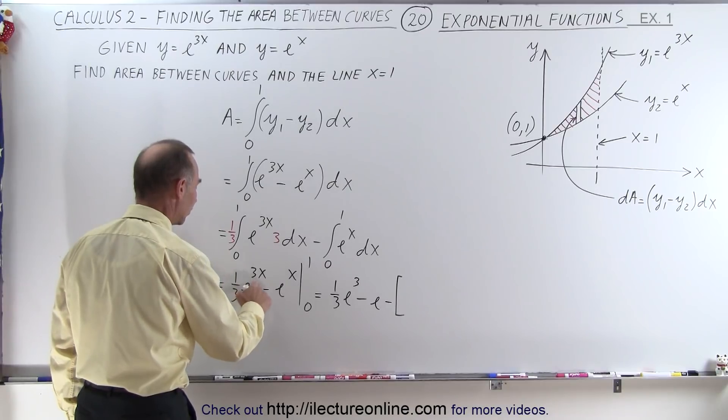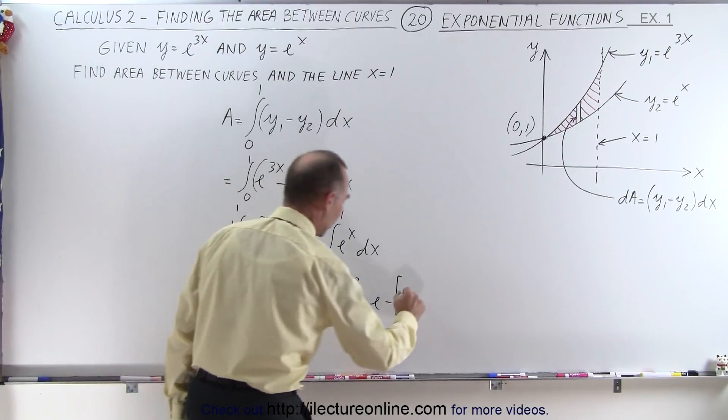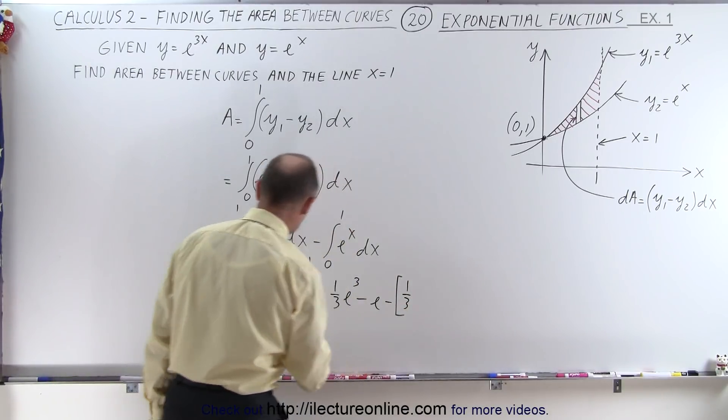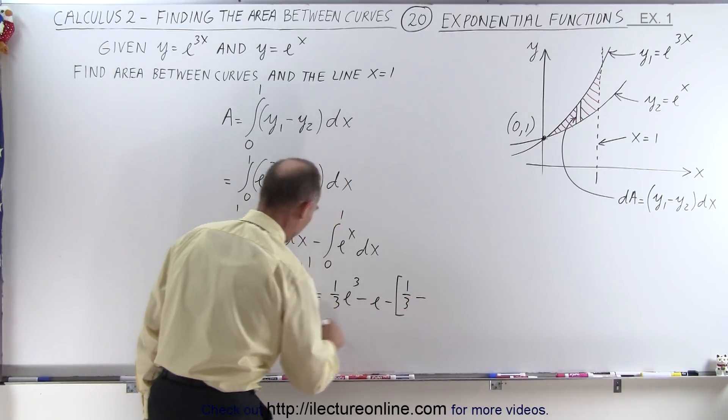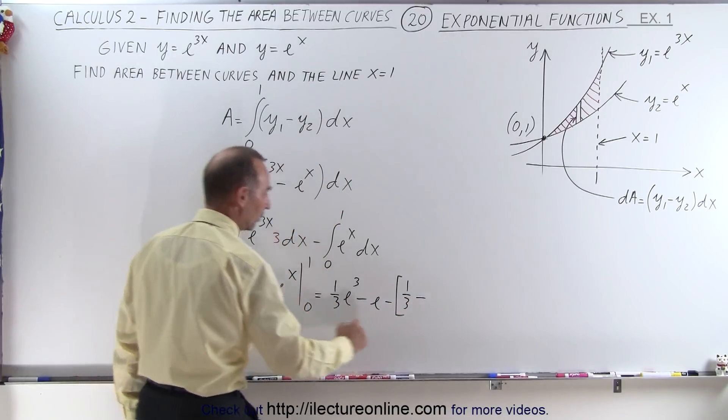And then minus when I plug in the lower limits, plug in the 0 here, I have 1 third e to the 0. e to the 0 is 1, that gives me 1 third, and here we have minus when I plug in the 0, e to the 0, which is 1, so I get a minus 1.